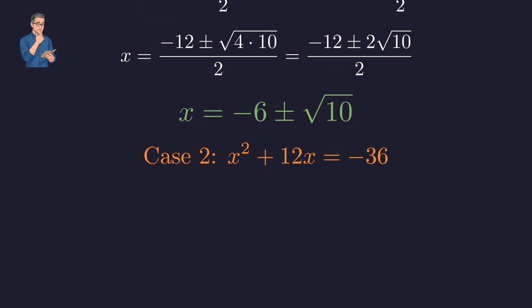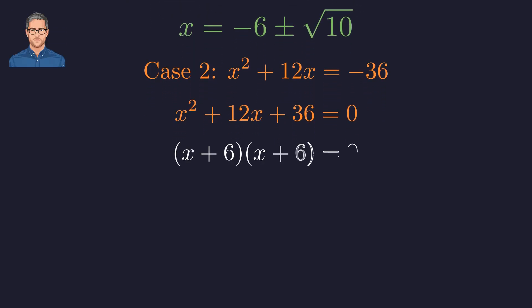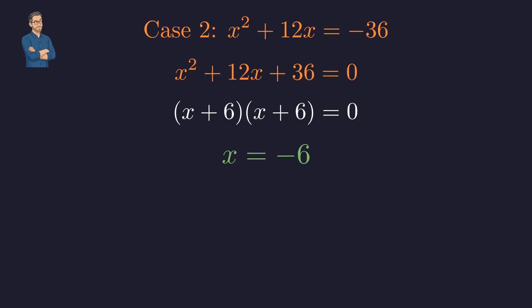Case 2: We set x² + 12x equal to -36. Again, we put the equation in standard form. We recognize this as a perfect square trinomial, which factors into (x + 6)(x + 6). This gives us our final solution, x = -6.